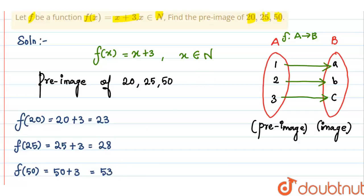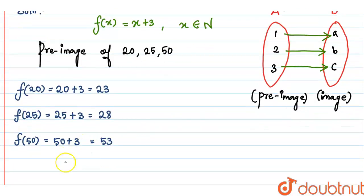So, this is the pre-image. Therefore, 23, 28, 53 are the pre-image.